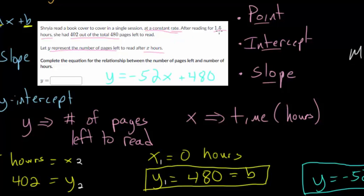And we know that if we put in 1.5 hours, so x is 1.5, if we put that in here, this would become minus 78. And minus 78 plus 480 would get us back to 402. So this equation does work with the information that we were given, so we can feel confident that this equation is correct. And we also know that when you plug in 0, when no time has passed, you have 480 pages left to read.